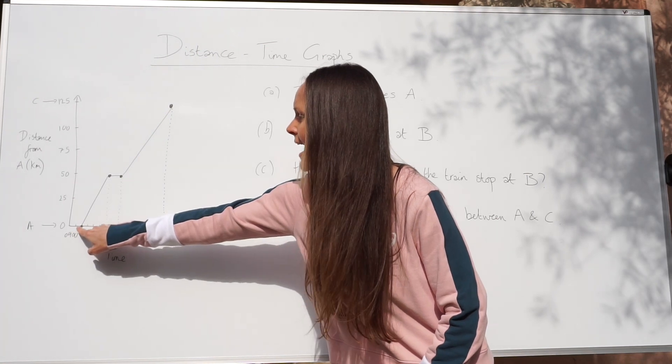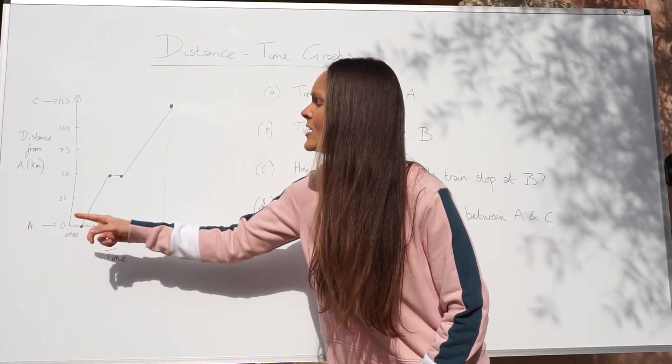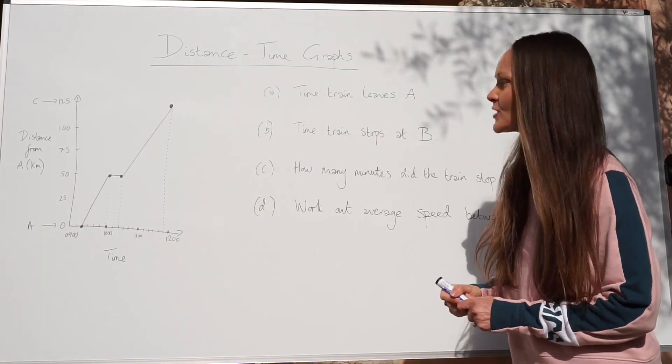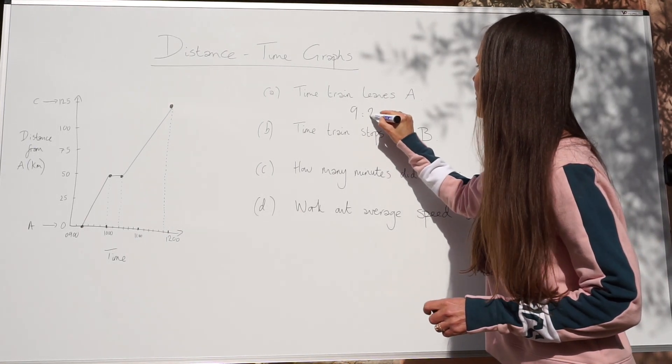So if this is 9 o'clock, this is 10 past 9 and this is 20 past 9. So we know the train leaves at 20 past 9. So that's the answer to part 1.